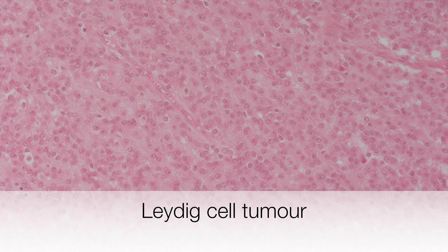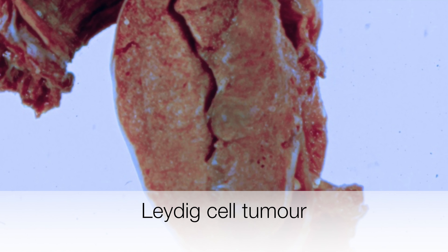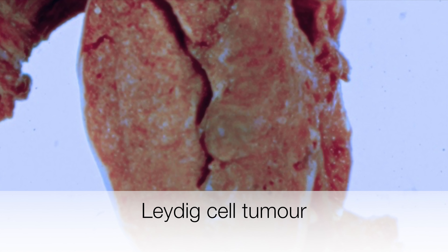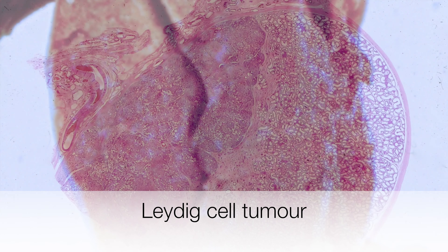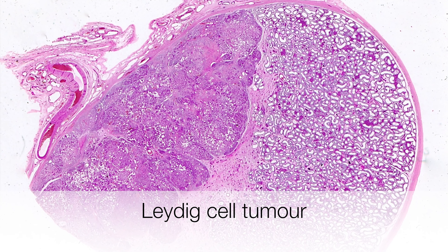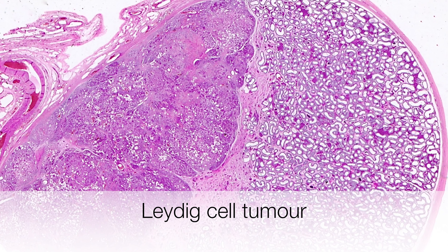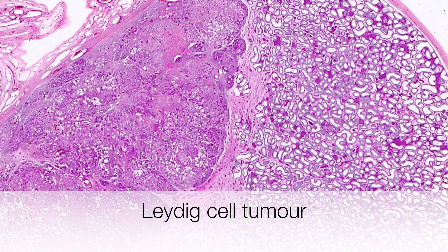Here is a Leydig cell tumour that has been stained for inhibin. This testis contains a Leydig cell tumour and it is the pale brown well-circumscribed lesion we're zooming into at the centre of the picture. And this is an H&E of a whole mount section of a testis that demonstrates just how well circumscribed this Leydig cell tumour is. Notice the lesion at the left side of the testis.